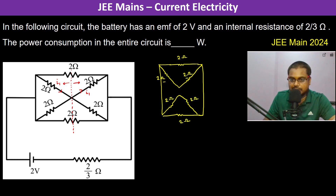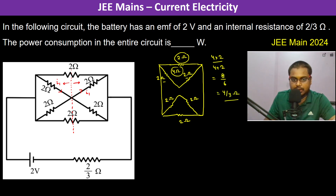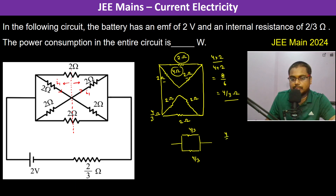These two are in series, so that gives 4 ohm. In parallel with 2 ohm, that becomes (4×2)/(4+2) = 8/6 = 4/3 ohms. This side is also 4/3 ohm, so now we have 4/3 ohm and 4/3 ohm in parallel, which gives (4/3)×(1/2) = 2/3 ohm.